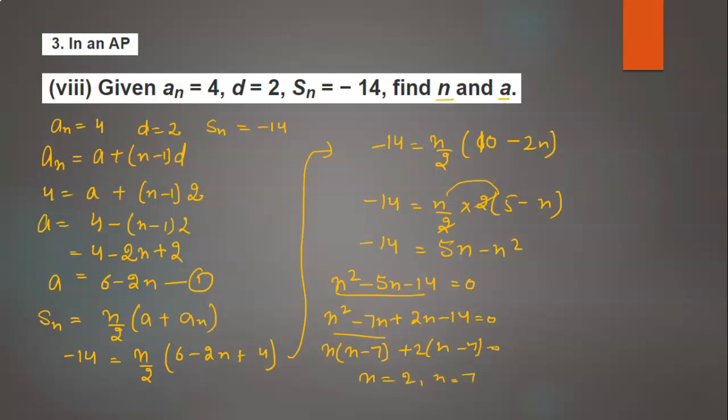Here n = 7 and n = -2. But number of terms cannot be negative, so it will be neglected. The number of terms is 7, so we will get n = 7.